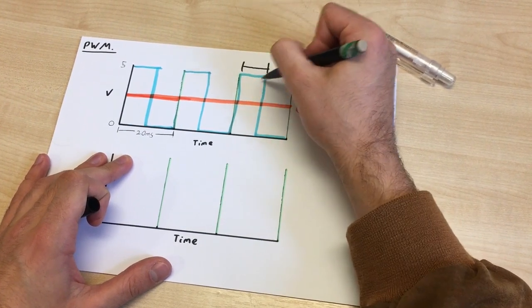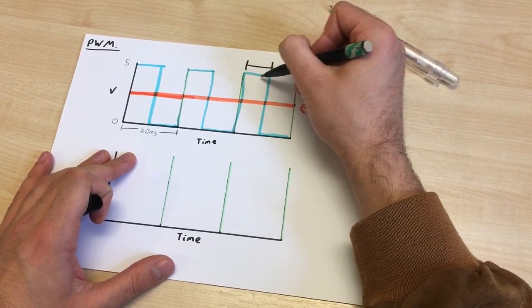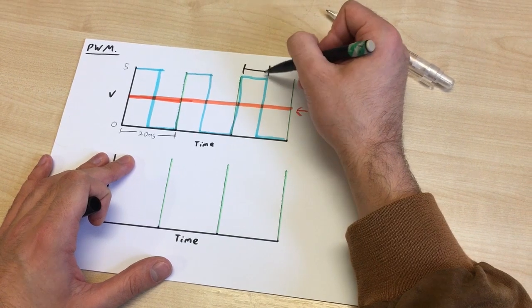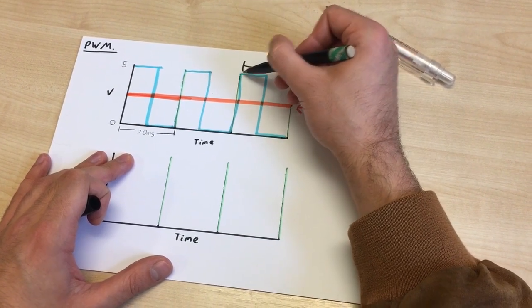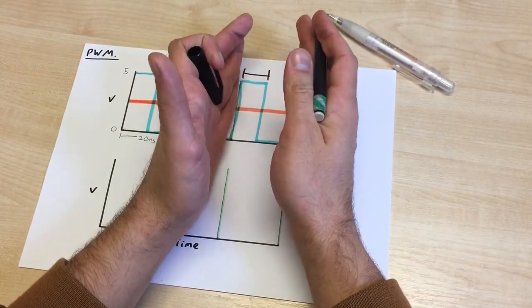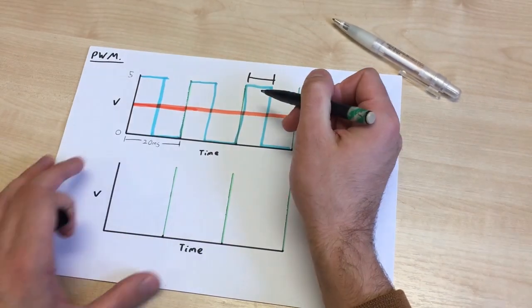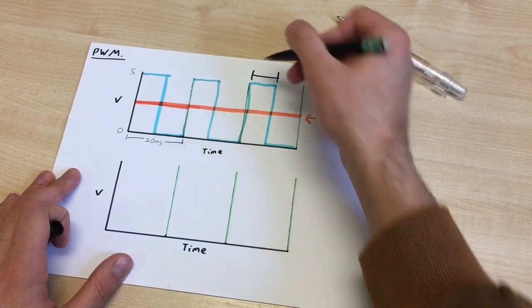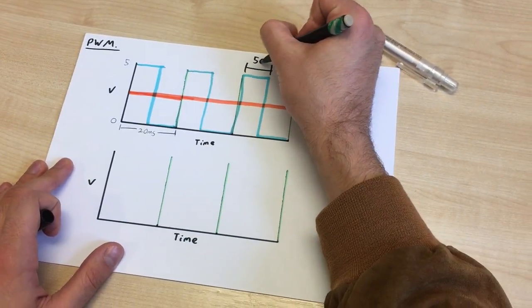So, this is the amount of time that the wave is on for, and this is known as the duty cycle, and it's as a percentage. So, at the moment, the wave, in one wave cycle, the wave is on for about 50% of the time. So, the duty cycle is 50%.